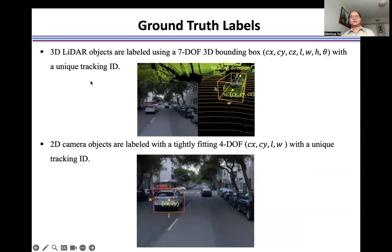We use 7DOF to describe a 3D LiDAR object. This includes 3 values for the central position of the object — CX, CY, CZ — plus 1 for length, 1 for width, 1 for height, and 1 for the heading direction.